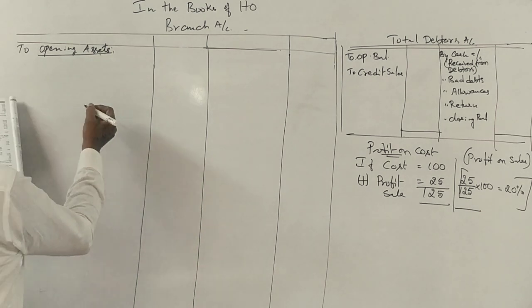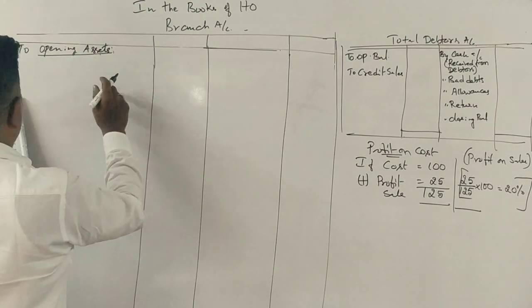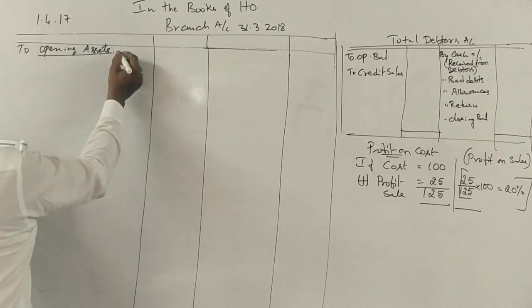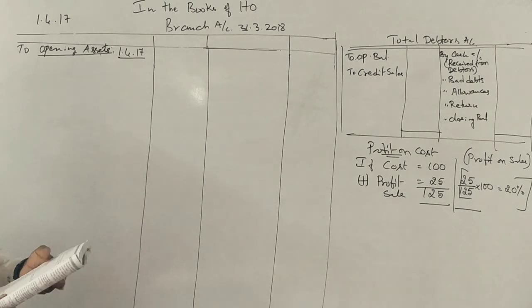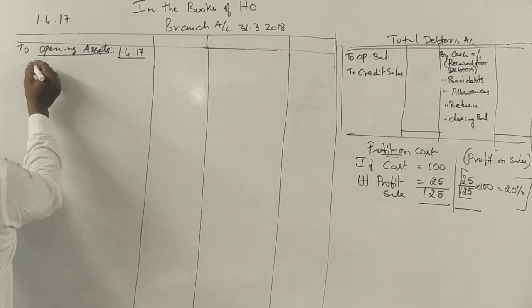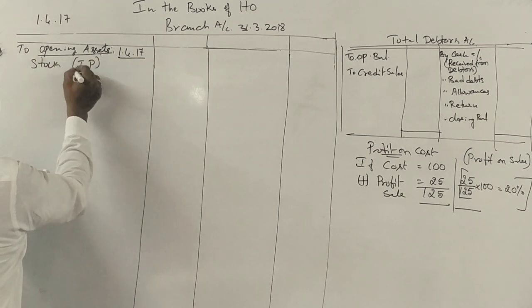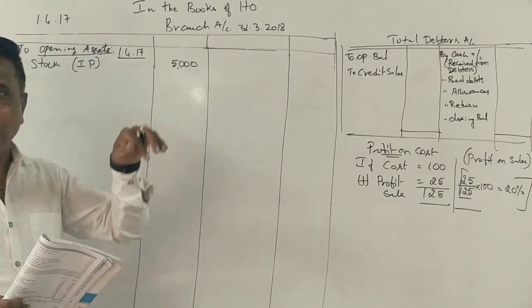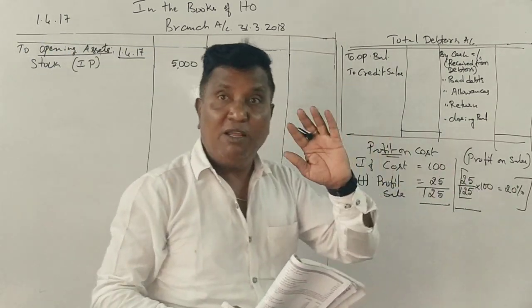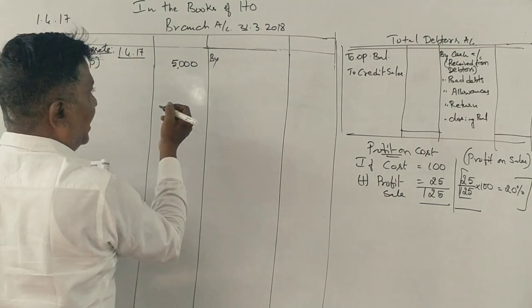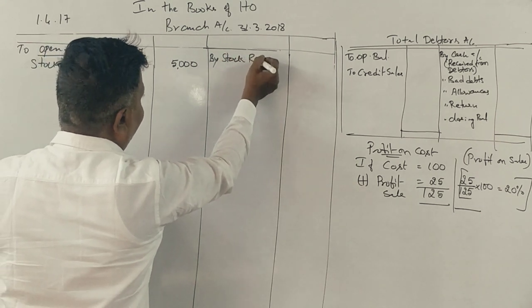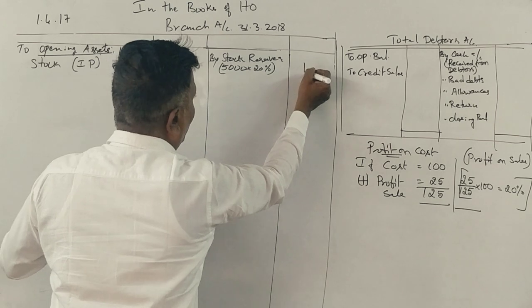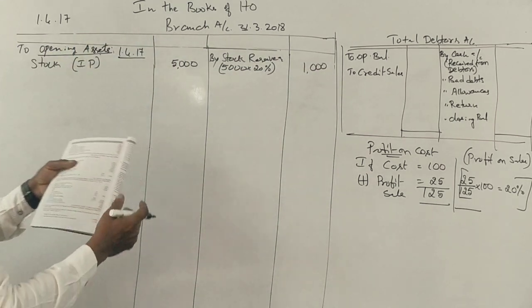First, what is the opening assets? The opening assets is 1-4-2017. Opening assets: to stock at invoice price 5,000 rupees. Profit 20%, so stock reserve account 5,000 into 20% equals 1,000 rupees. Debtors 1-4-2017: 3,500 rupees.